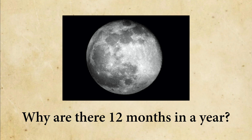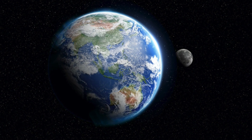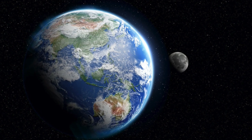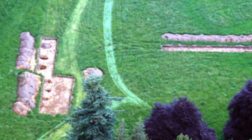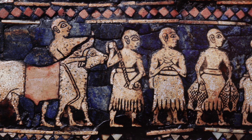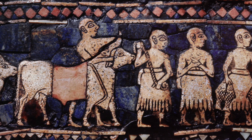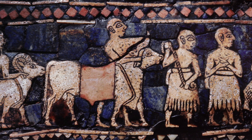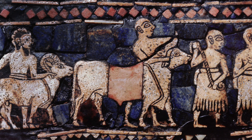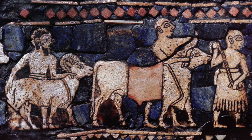Why are there 12 months in a year? Many ancient cultures came up with the system of dividing the year based on the cycles of the moon. The oldest known calendar in the world, a 10,000-year-old arrangement of 12 pits and an arc, was found in Aberdeenshire, Scotland. The ancient Sumerians counted 12 months in a year and started each month with the appearance of a new moon, with holy days occurring on the 1st, 7th, and 15th of each month.